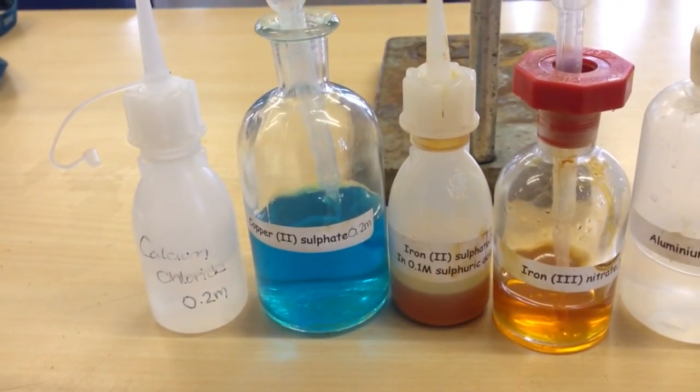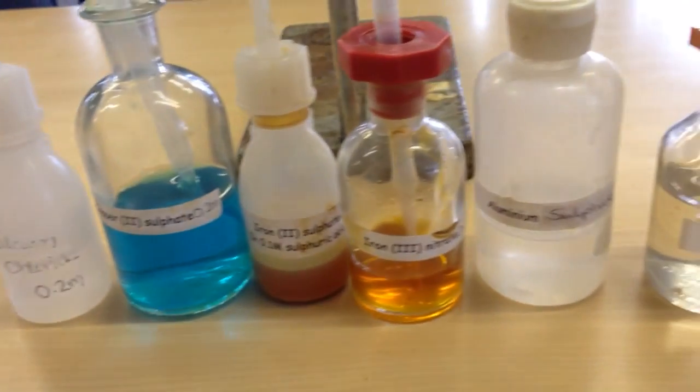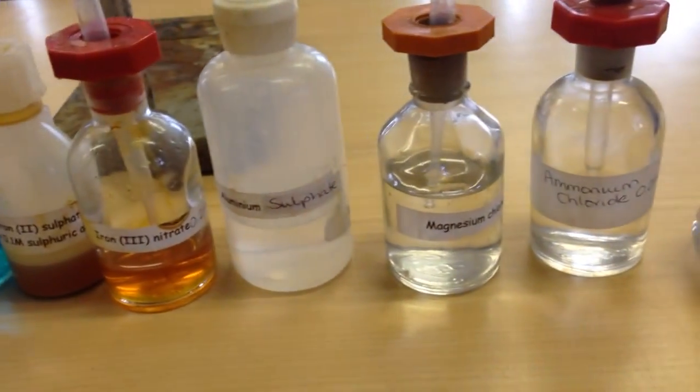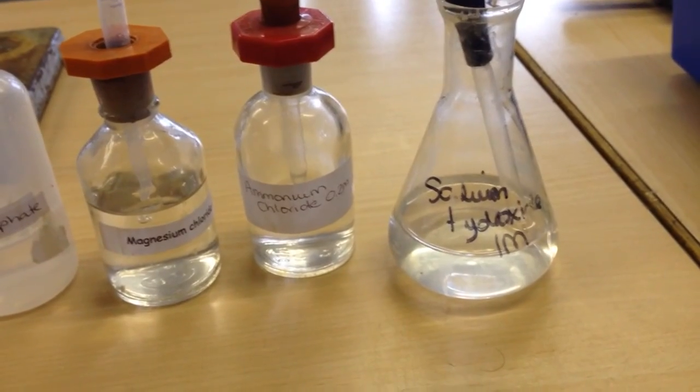So we're going to be looking at a test for positive ions. We're going to be looking at calcium, copper, iron 2, iron 3, aluminum, magnesium, and ammonium, and you react them all with sodium hydroxide.